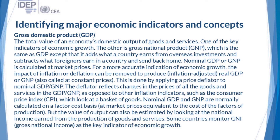Gross domestic product is the total value of an economy's total output of goods and services, and it is one of the key indicators of economic growth. Gross national product is the same as GDP, except that it adds what a country earns from overseas investments and subtracts what foreigners in that country send back to their home country. Nominal GDP or nominal GNP is calculated at market prices. For a more accurate indication of economic growth, the impact of inflation and deflation can be removed to produce inflation-adjusted GDP, also called real GDP or GDP at constant prices.